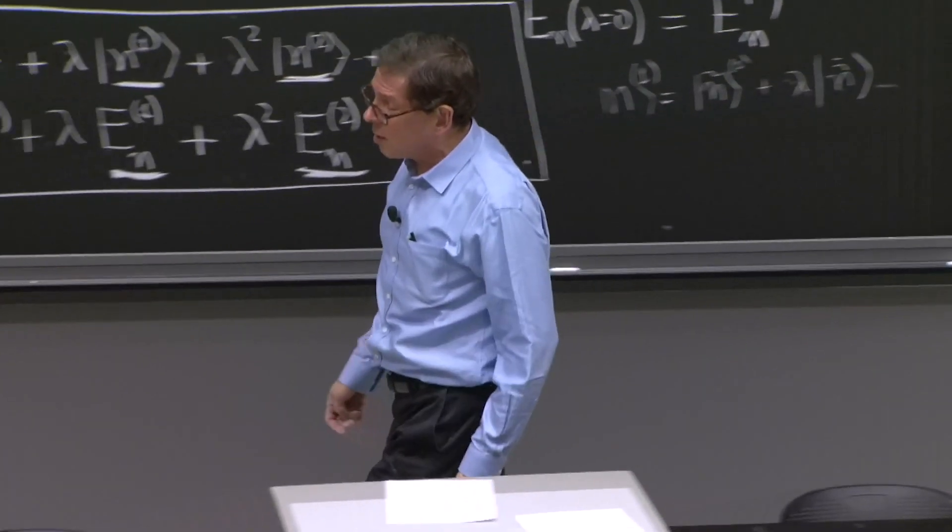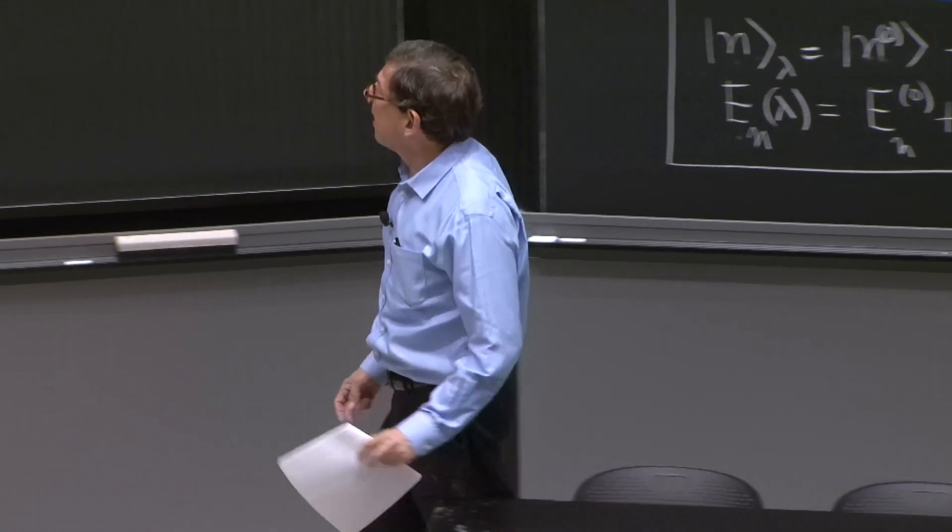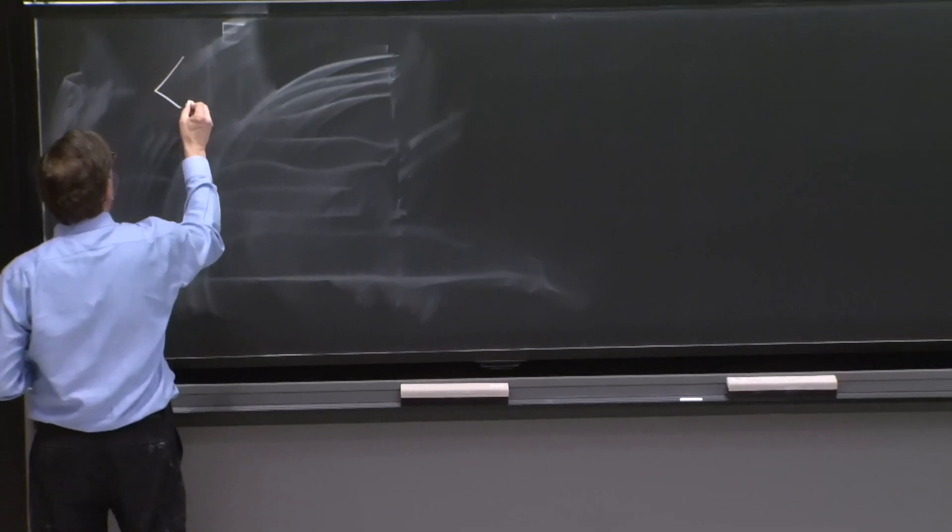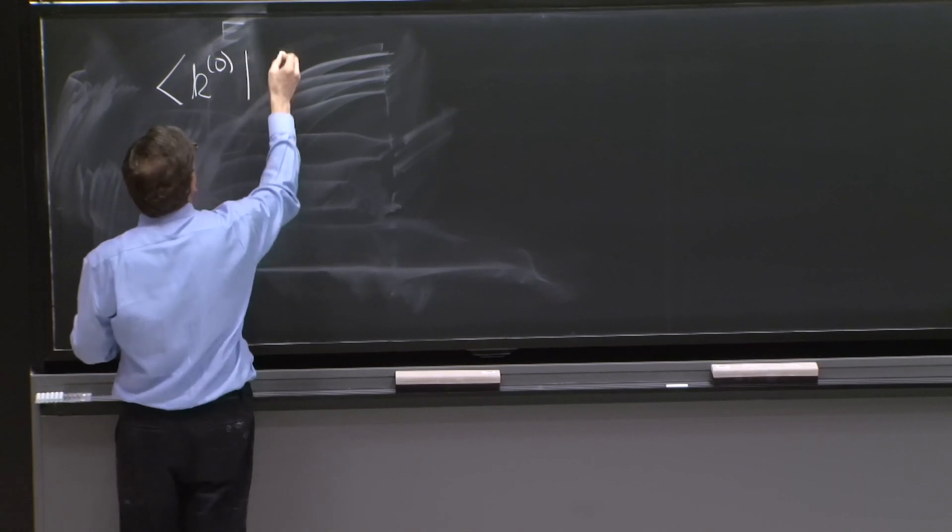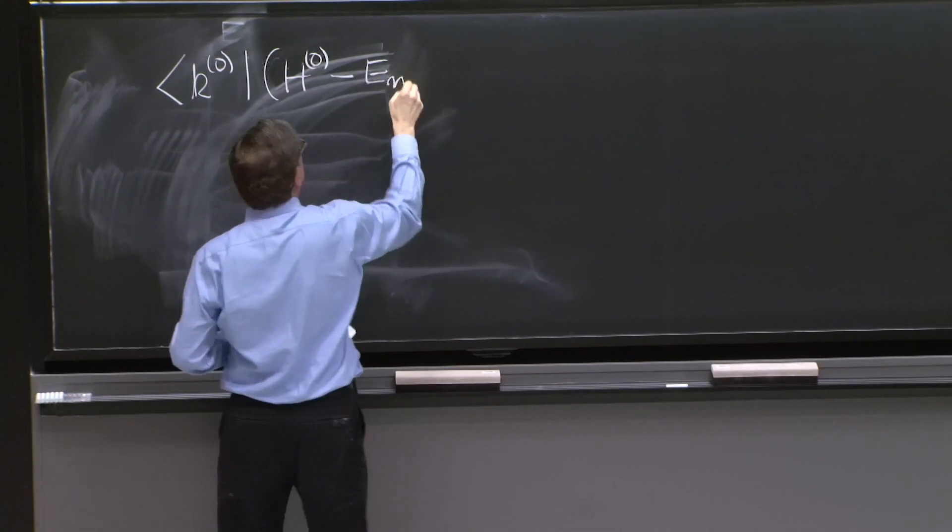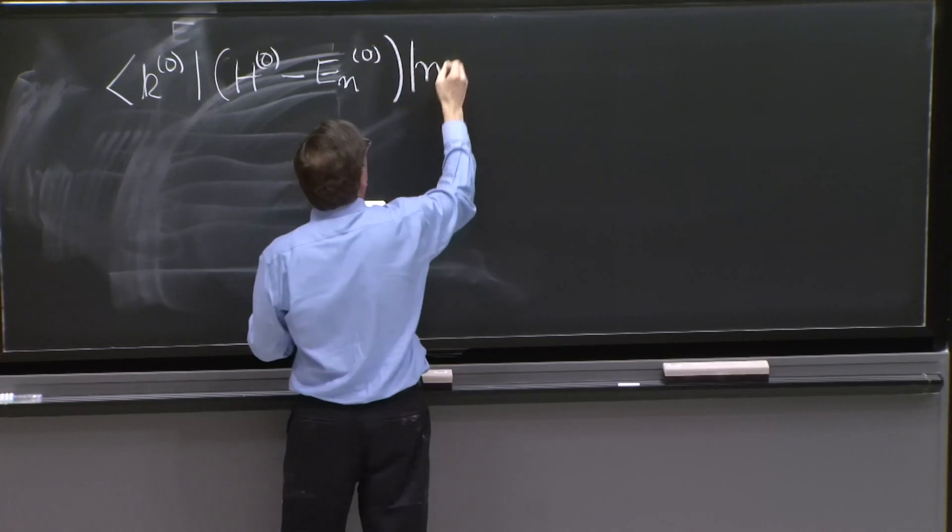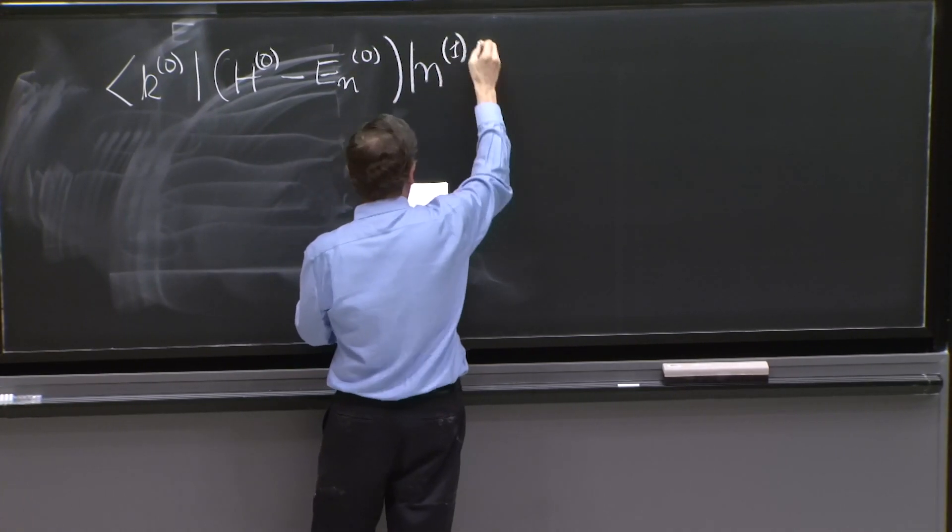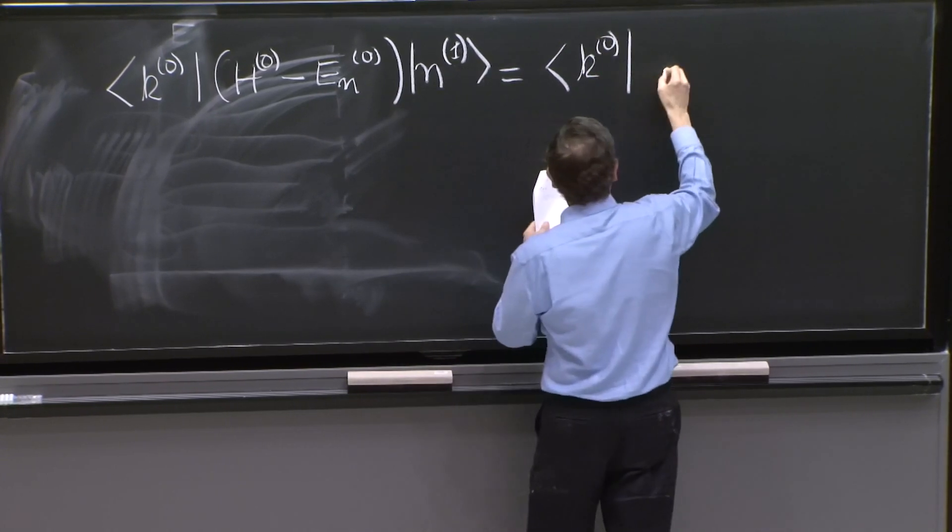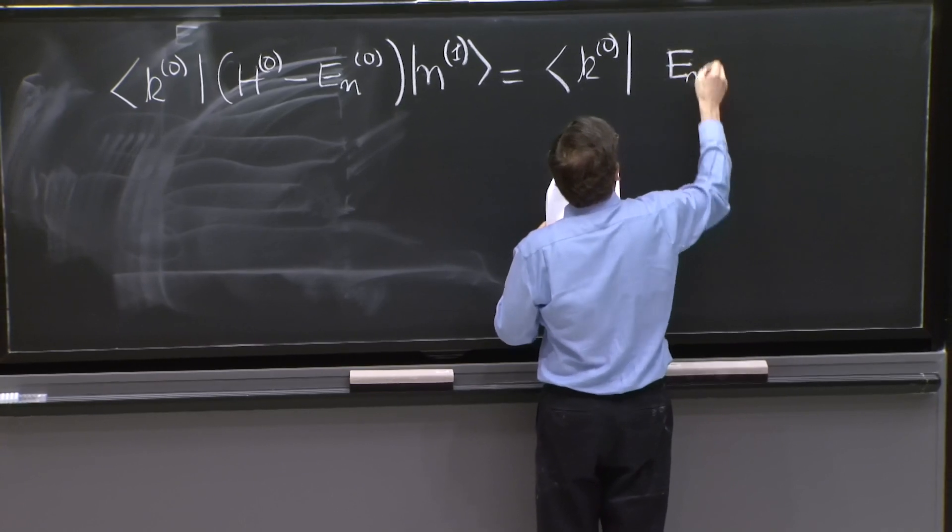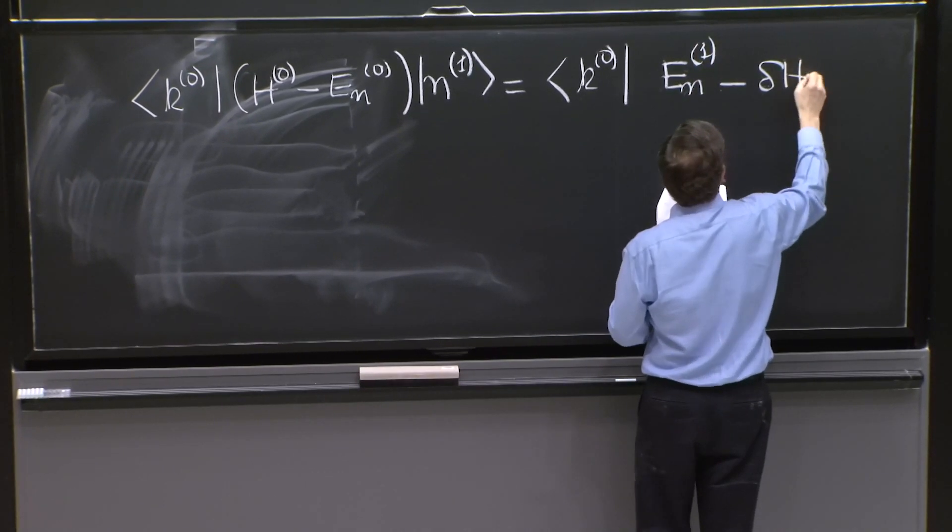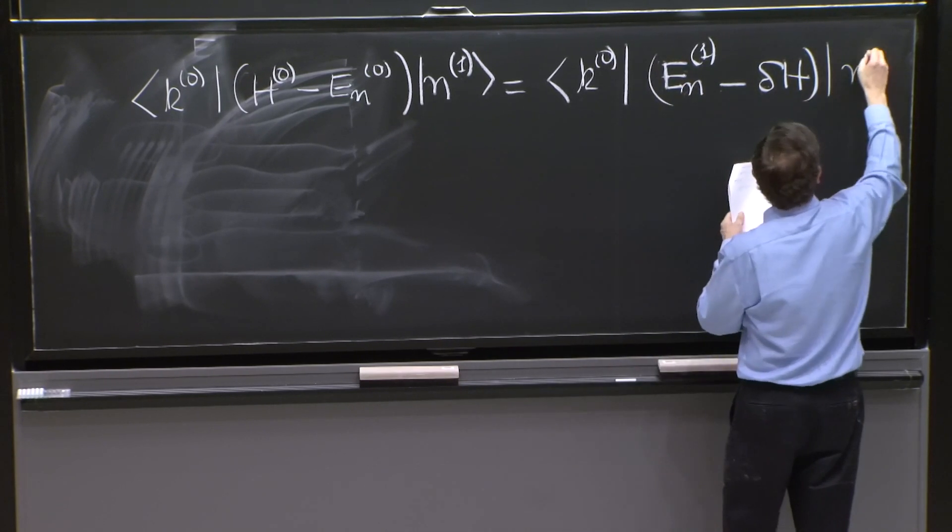So what we're going to do is take that original, this second equation, and form k0, H0 minus E_n0, n1,